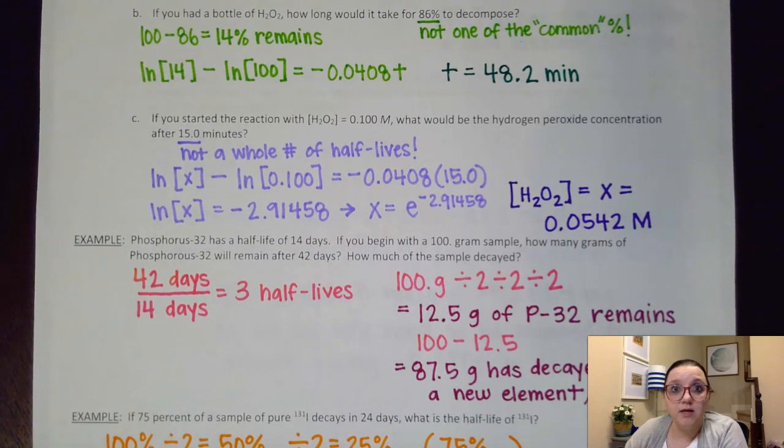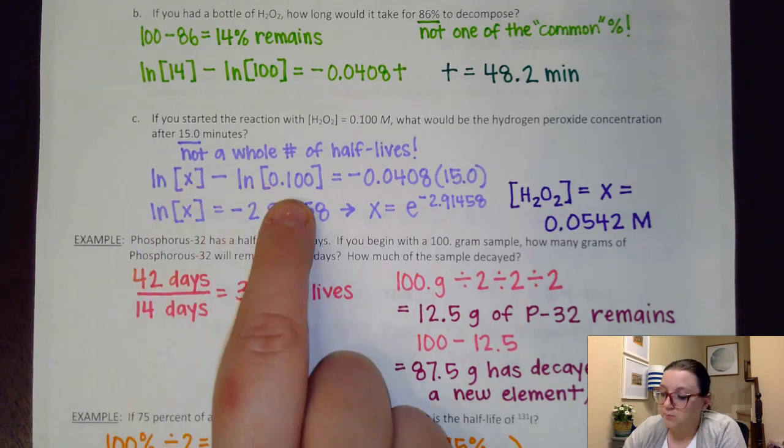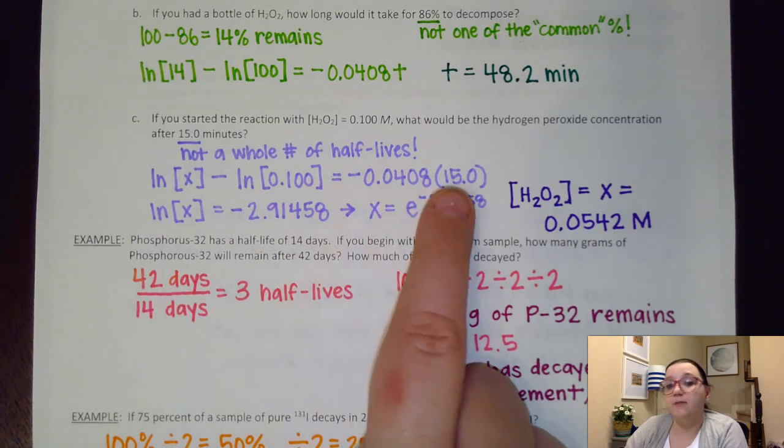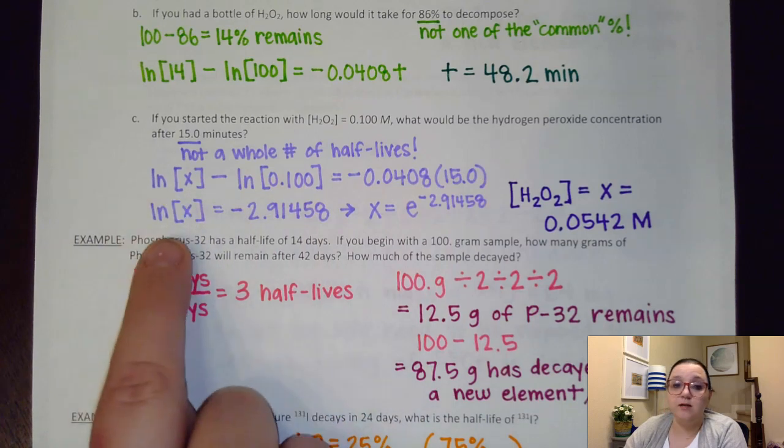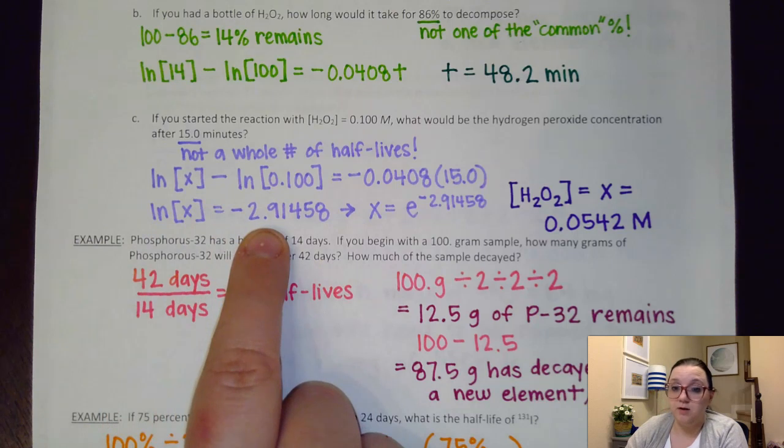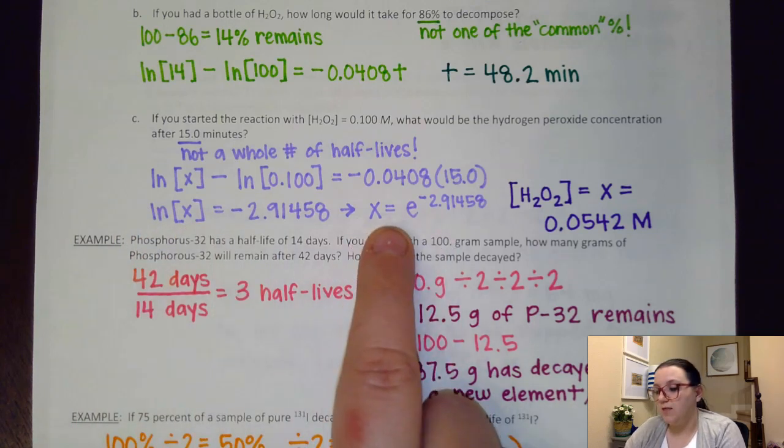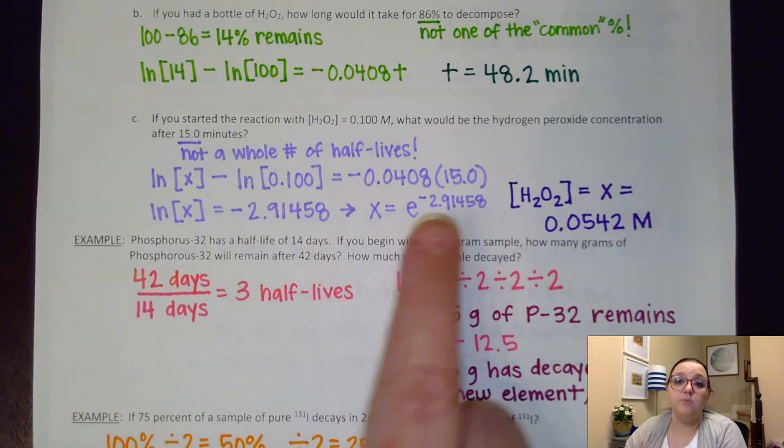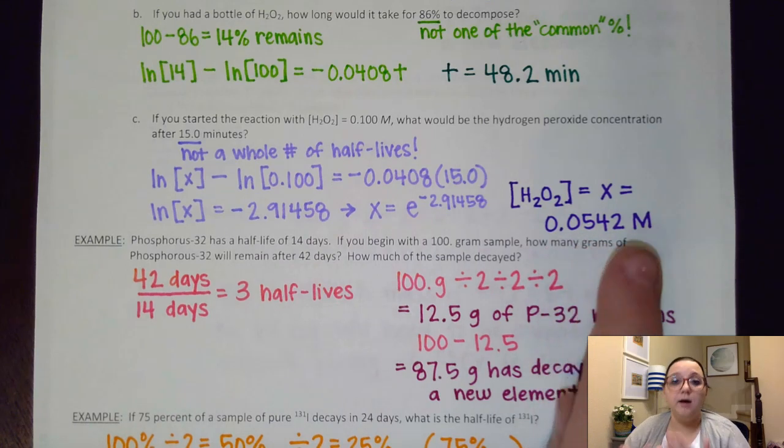I'm at 15 minutes. So it's a fractional number of half-lives here. And so I'm going to have to use my formulas to figure this out. What I did is I plugged everything into my integrated formula. I put concentration of X here because I don't know that. My initial molarity was 0.1. I put in my K. I put in my time of 15 minutes. This is one of those where when you consolidate all this other math, that ends up equaling ln[X].